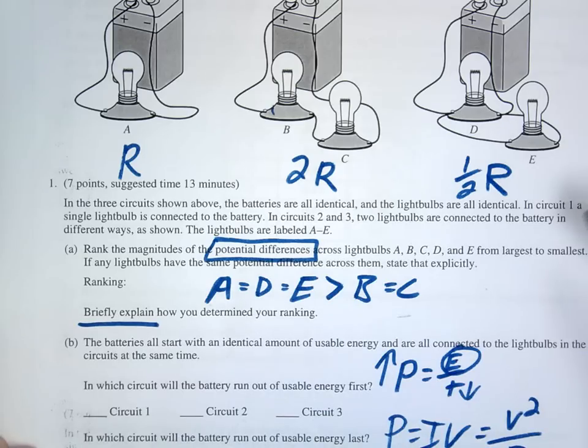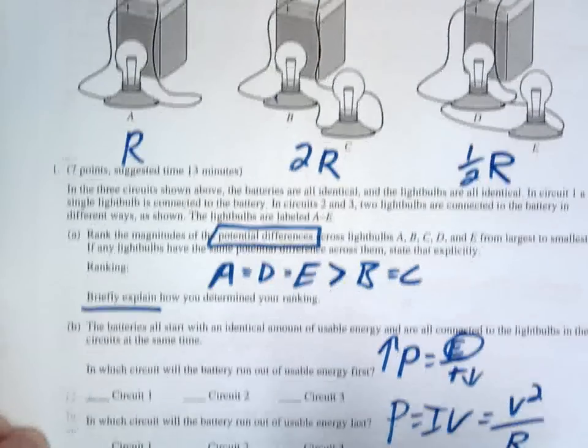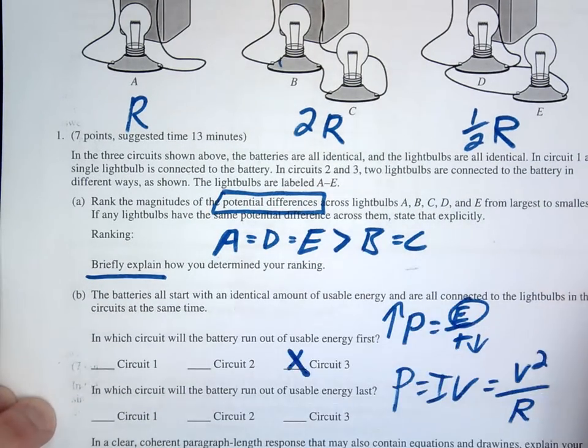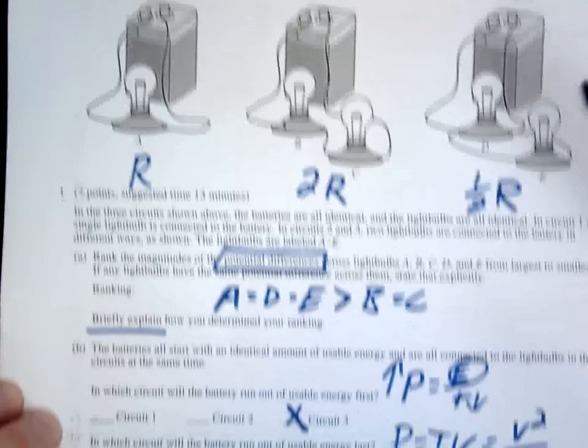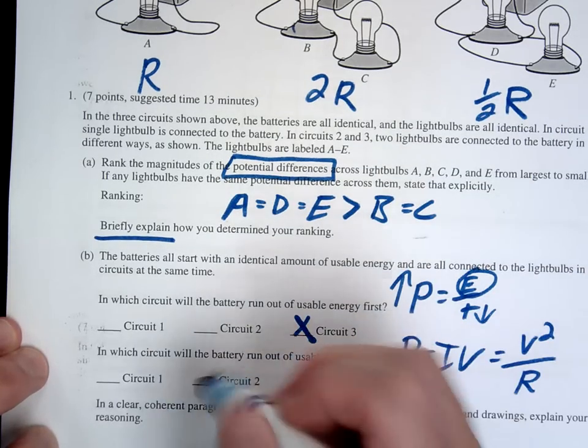Okay, so hopefully you can now see that the parallel one has the least resistance and therefore the most power. So therefore circuit number 3 is going to run out of usable energy first and circuit 2 has the most resistance therefore the least amount of current and least amount of power and that would run out of energy last.